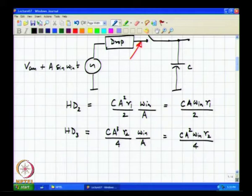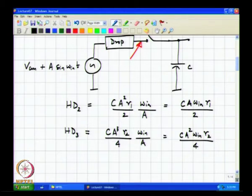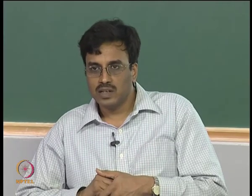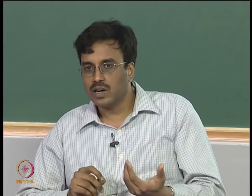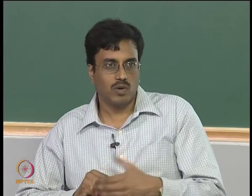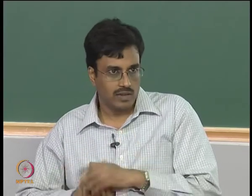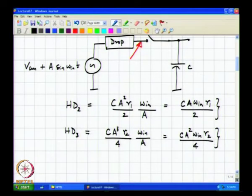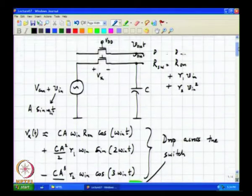Similarly, one can define the third harmonic distortion HD3 as the amplitude of the third harmonic component, which is C·A³·R2/4·ω_n, divided by A. This gives HD3 equals C·A²·ω_n·R2/4. Clearly, as the input amplitude increases, HD2 and HD3 increase, which makes sense: in a non-linear system, increasing input amplitude increases harmonic amplitudes. The third harmonic level goes up as A-cubed, the ratio of the third harmonic to the fundamental goes as A-squared, and HD2 goes as A. Also, R1 and R2 influence the second and third harmonic levels respectively.